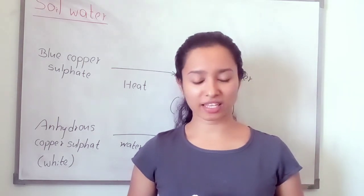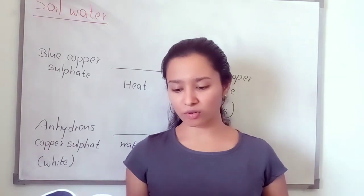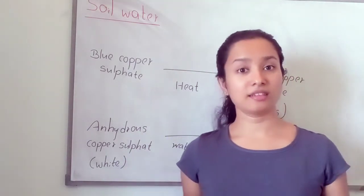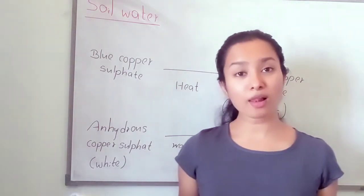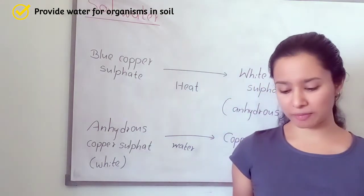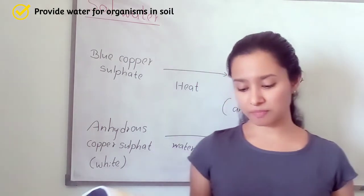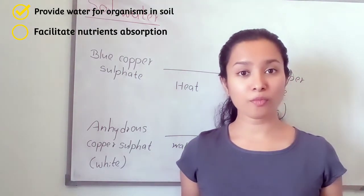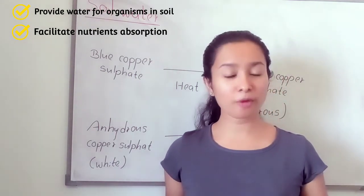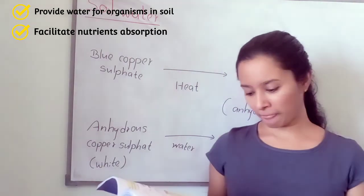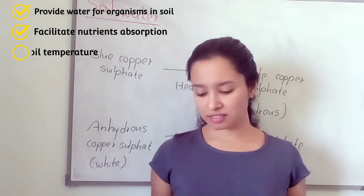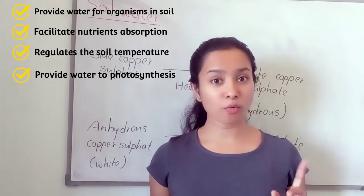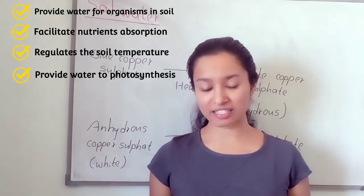Water is in the soil. The functions of soil water include: all microorganisms, plants, and animals in the soil need water to maintain their body and life functions. Nutrients in the soil dissolve in the soil water, and plants can absorb these nutrients via water. Soil water also controls the temperature of the soil, and water is one raw material for photosynthesis.